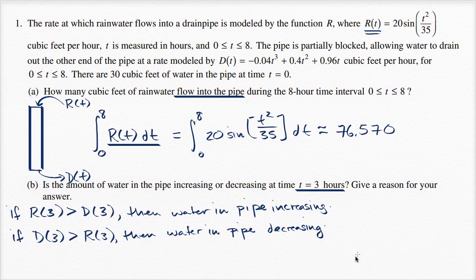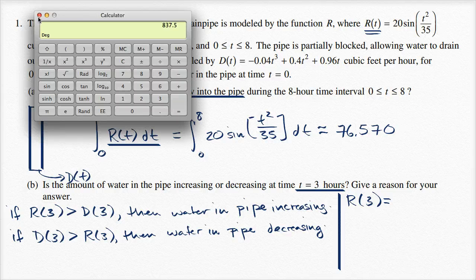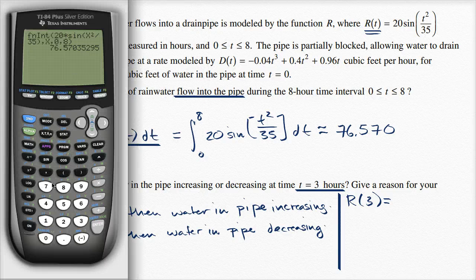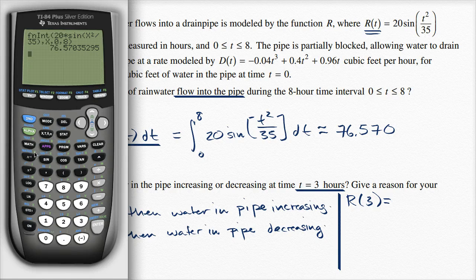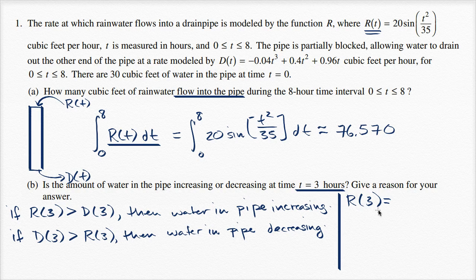So let's see. Actually I can do it right over here. So R(3) is equal to, let me get my calculator out. And I'm assuming that things are in radians here, so I already put my calculator in radian mode. So it's going to be 20 times sine of three squared is nine divided by 35. And it gives us, this is equal to approximately 5.09. So this is approximately 5.09.